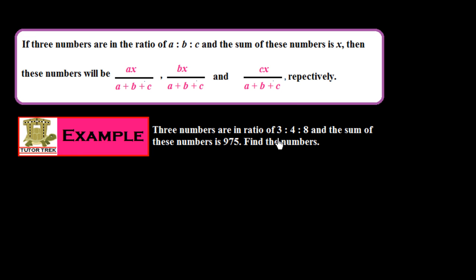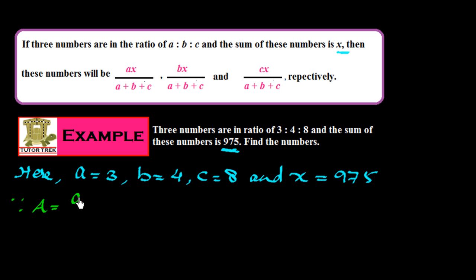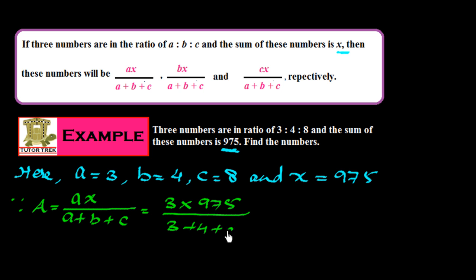Here is an example: three numbers are in ratio of 3 to 4 to 8 and the sum of these numbers is 975. So a=3, b=4, c=8 and x=975. The first number a = ax/(a+b+c) = 3×975/(3+4+8) = 3×975/15.